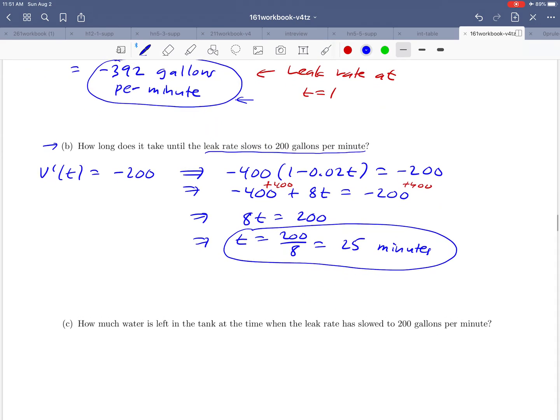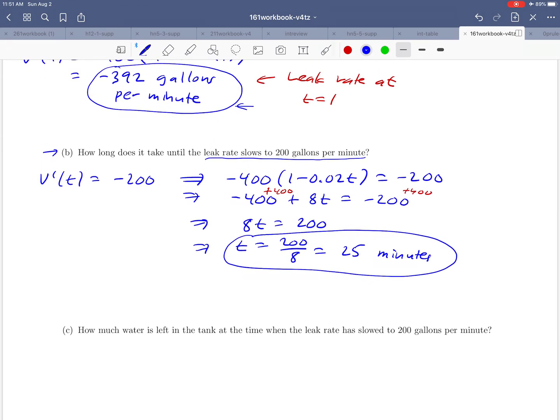And then finally, we come to part C, which asks us how much water is left in the tank at the time when the leak rate has slowed to 200 gallons per minute. So it's asking us for a volume at a particular time, and my question to you is, do we know what that particular time is? The time when the leak rate slows to 200 gallons per minute, that's exactly what we found up here in part B.